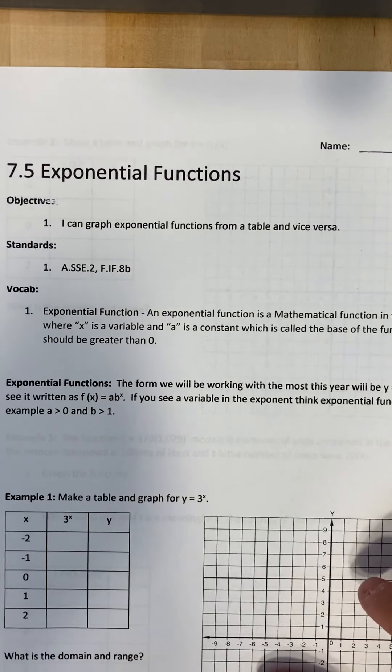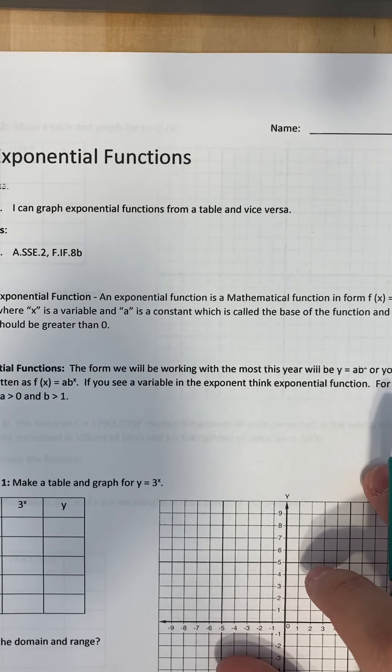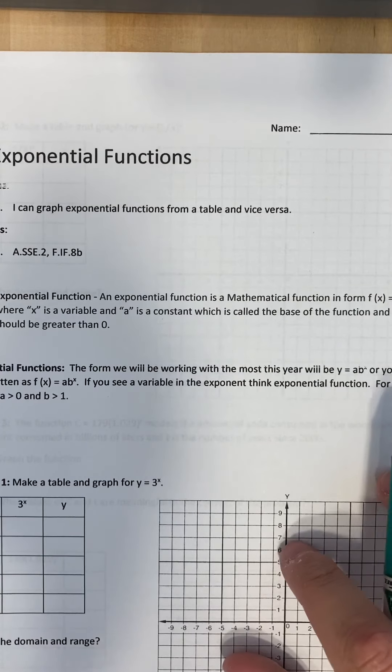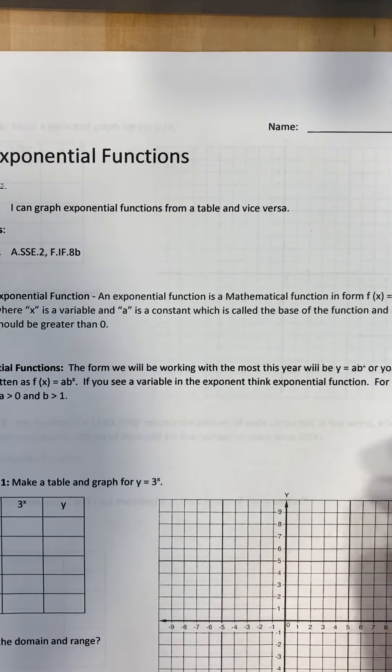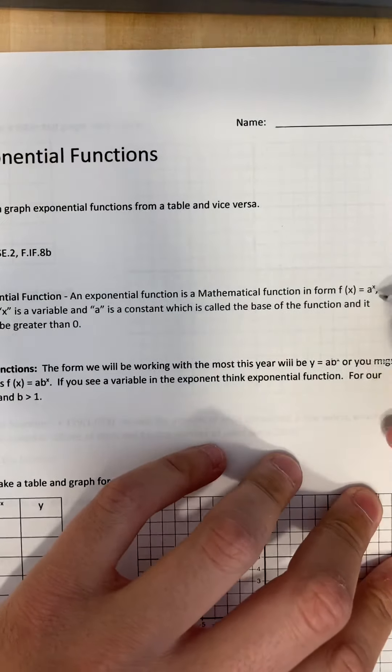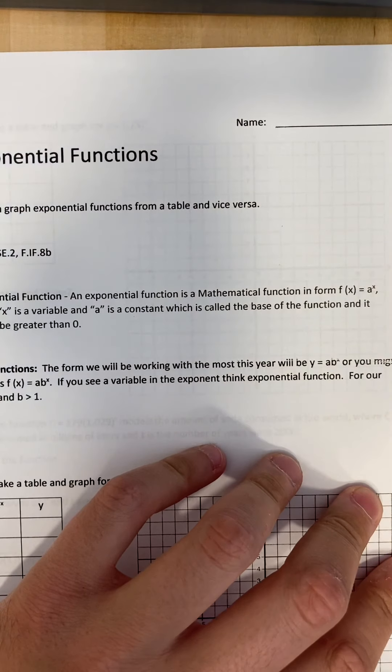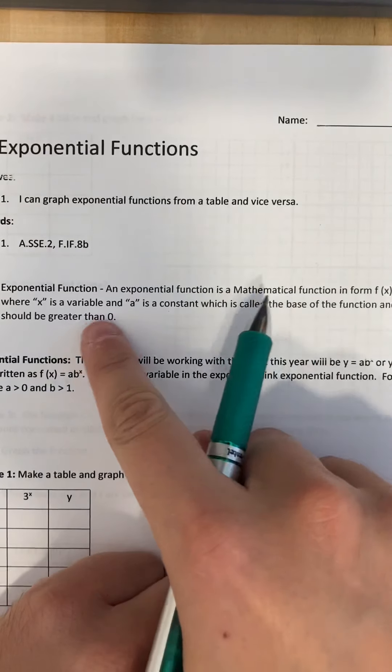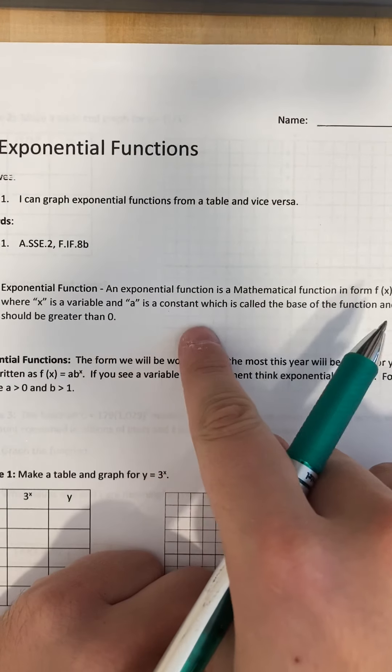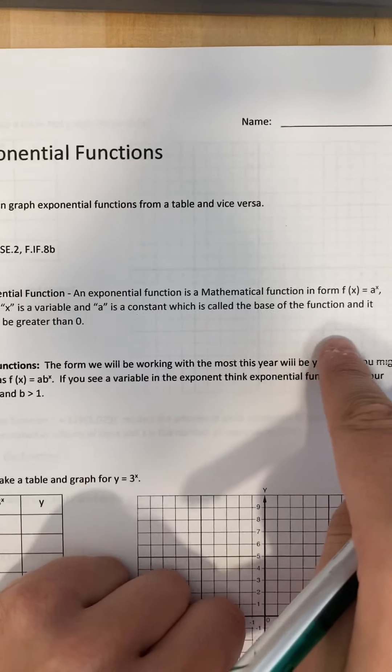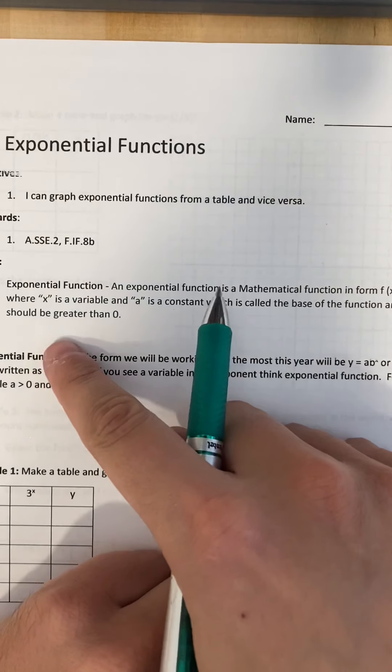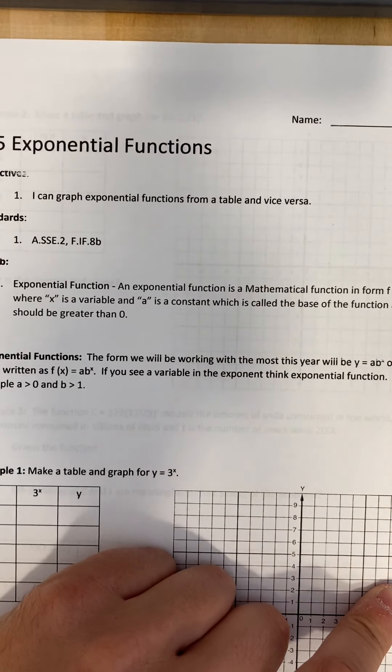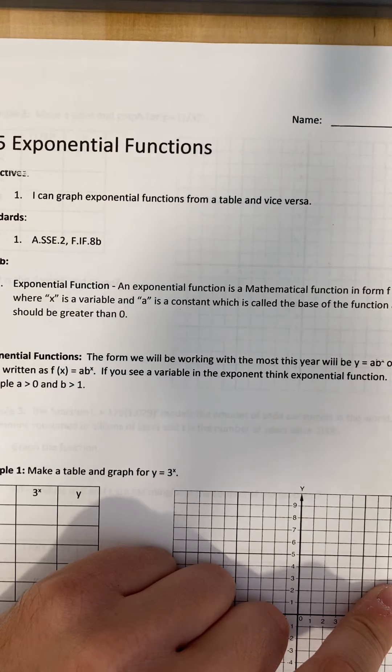An exponential function is a mathematical function in the form of f(x) equals a to the x power. See how your x, your variable, is in the exponent. So x is a variable and a is a constant, which is called the base of the function, and it should be greater than zero in our case. If it was zero, then it wouldn't really be a function.